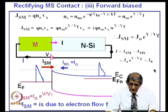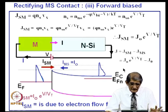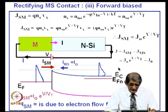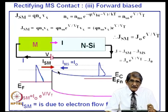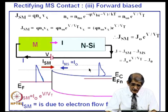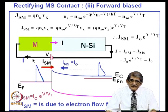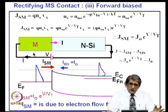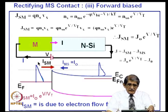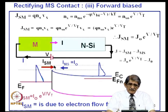Once again, remember the barrier φ_bn has not changed because of forward bias. The forward current increases because of increased electron injection from the semiconductor to the metal. In the p-n junction, the current increases due to hole injection from p to n and electron injection from n to p. But in the metal-semiconductor contact, the metal-to-semiconductor component remains J₀ unchanged, while the semiconductor-to-metal component J_sm increases exponentially with applied voltage V.